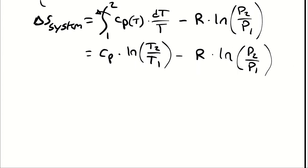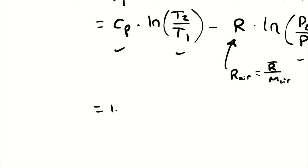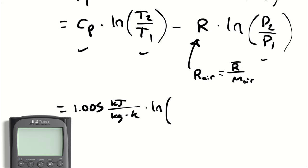Then I'm subtracting specific gas constant times the natural log of P2 over P1. Cp is known, that is 1.005. T2 and T1 are both determined now. P2 and P1 are both known. The only unknown here is the specific gas constant for air, which is the universal gas constant divided by molar mass for air. I will leave that symbolic for the moment so I have 1.005 kilojoules per kilogram kelvin multiplied by the natural log of T2 which was 319.23.